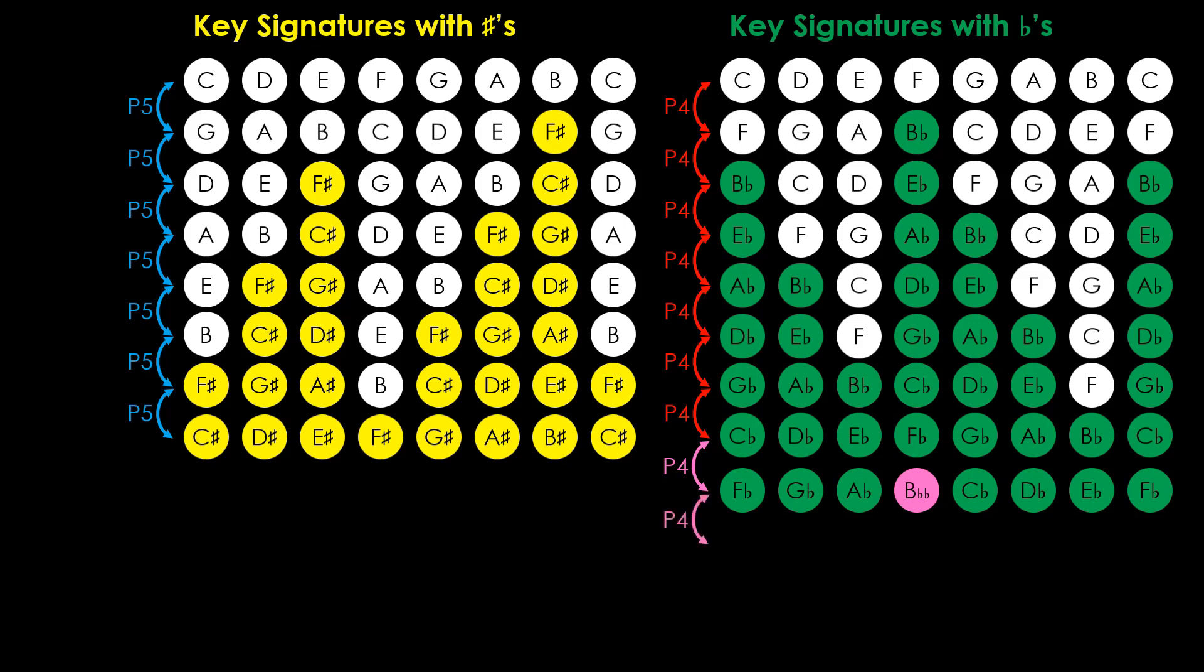Adding another perfect fourth gives B-double-flat major, which now has both B-double-flat and E-double-flat, and so on. We see that the resulting new symbols in the key signature begin to override the symbols it started with, thereby resulting in an infinite spiral.